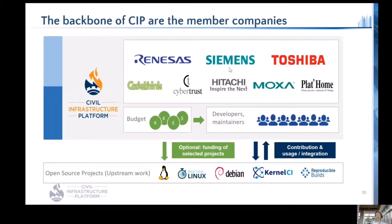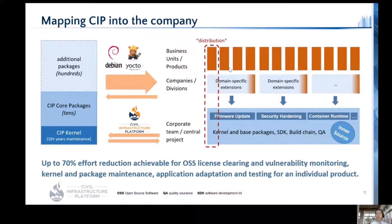Annual membership fees are pooled as budget and used to support maintainers and developers in CIP, and also invested in projects outside CIP. One member company reported that up to 70% effort reduction can be achieved by applying CIP across an entire organization — because activities like OSS license clearing, vulnerability monitoring, kernel and package maintenance can be shared instead of done separately. That is how cost savings are achieved.